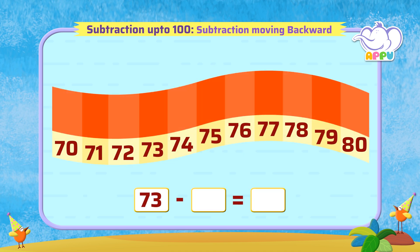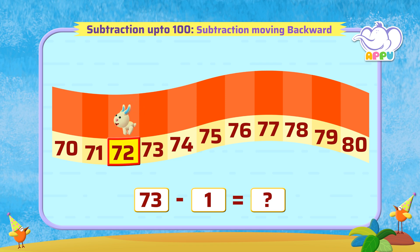73 minus 1. Count backwards by 1, which is 72. The answer is 72. That's coming along nicely!